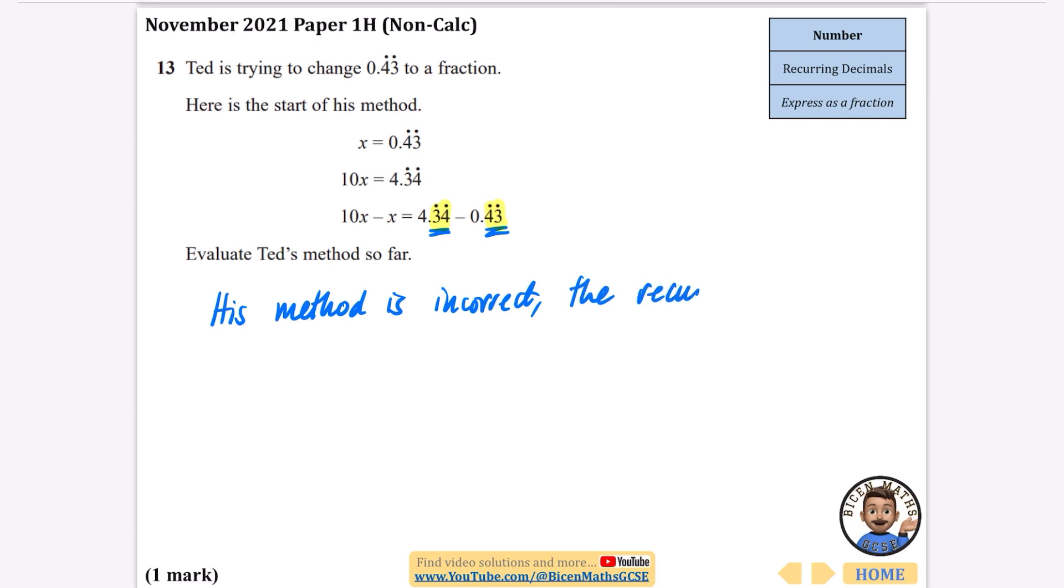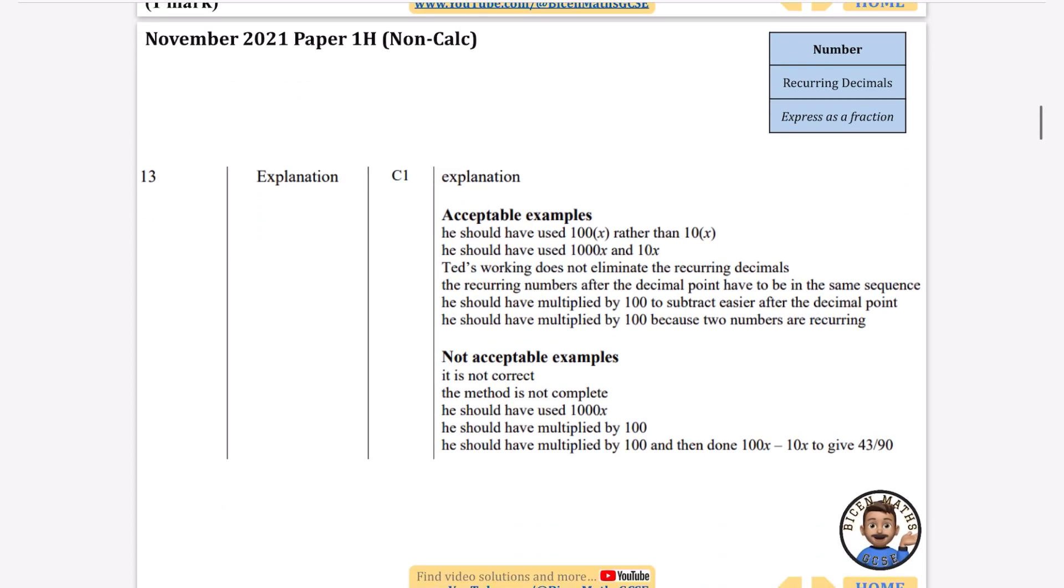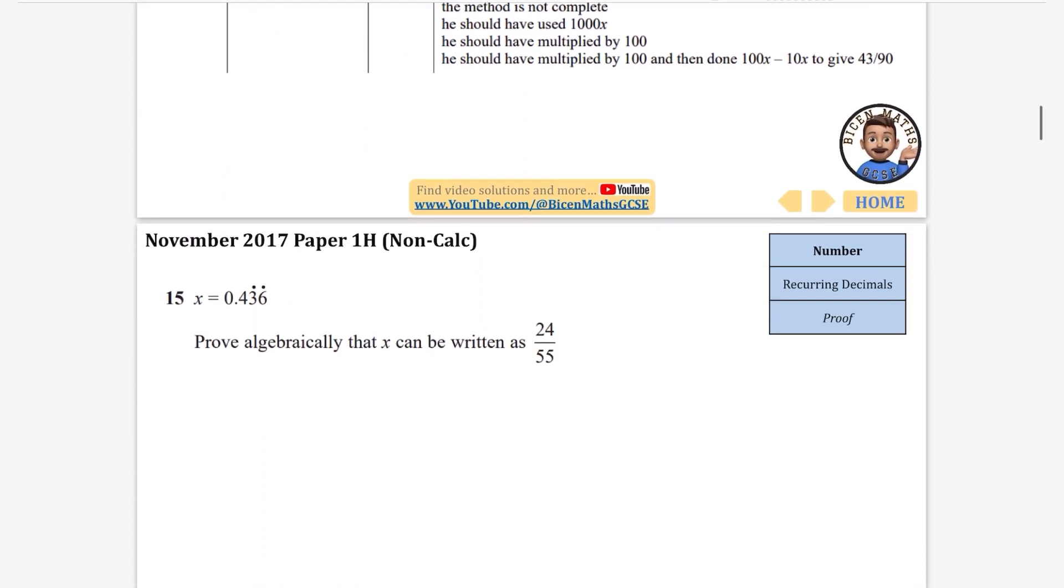So evaluate Ted's method: his method is incorrect. We need to give a reason why. The recurring decimals will not eliminate. Let's look at what they'd accept for this one. Acceptable answers: he should have used 100 rather than 10x, or Ted's working does not eliminate the recurring decimals. Just be careful of the ones that wouldn't be accepted. You couldn't just say it's not complete or it's not correct, or even he should have used 1000x. You have to be more specific than that.